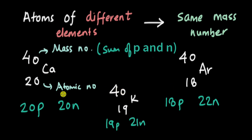So these three — calcium, argon, and potassium — are examples of isobars: atoms of different elements but with the same mass number.